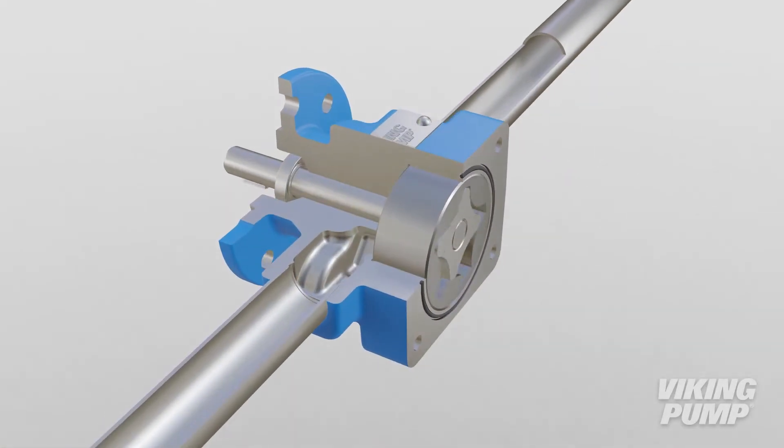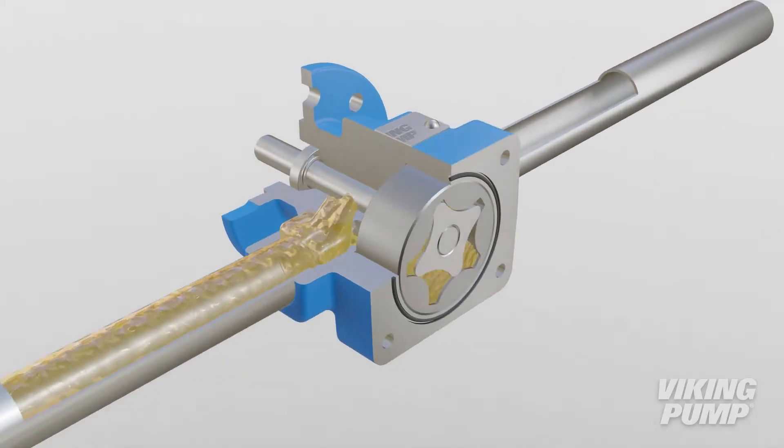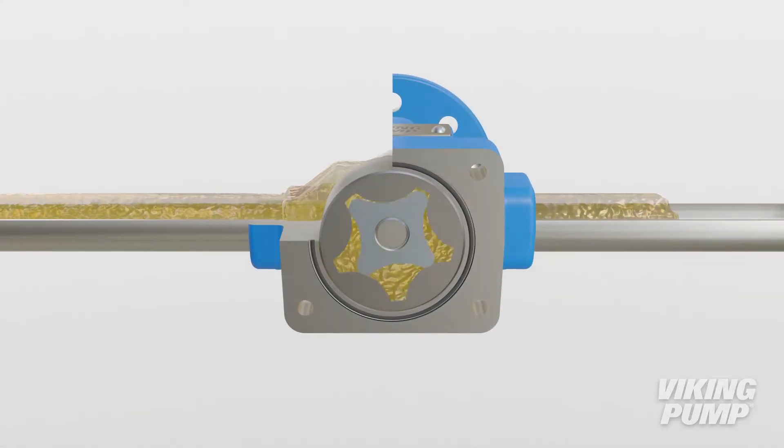Liquid enters the suction port between the teeth of the elements. There is a smaller inner driver element and a larger outer driven element. While tooth counts vary, the outer element has one more tooth than the inner element, creating cavities between the teeth.